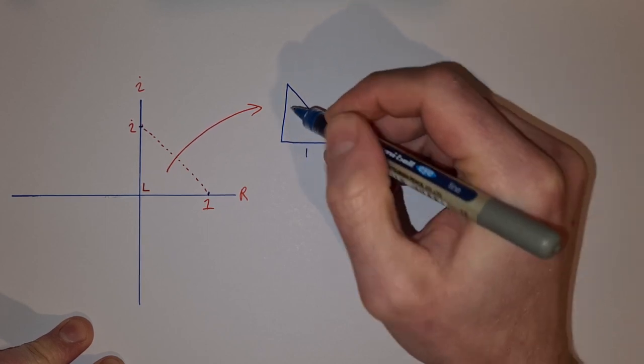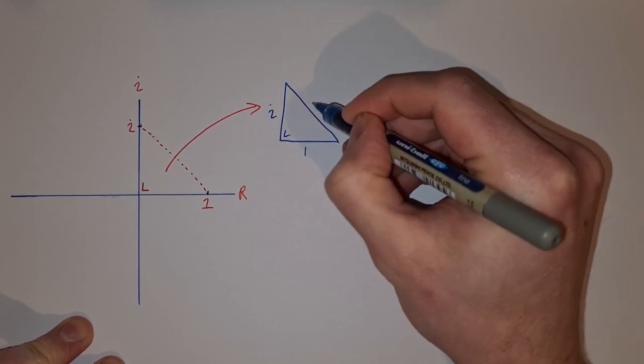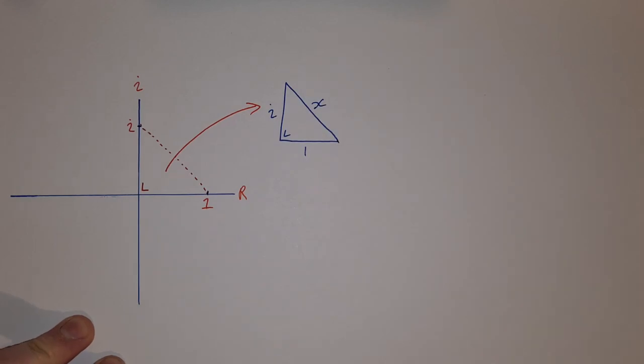So here's the right angle triangle. I have one, I have i, and I have x. Before you go on, write down in the comments what you think the answer might be.